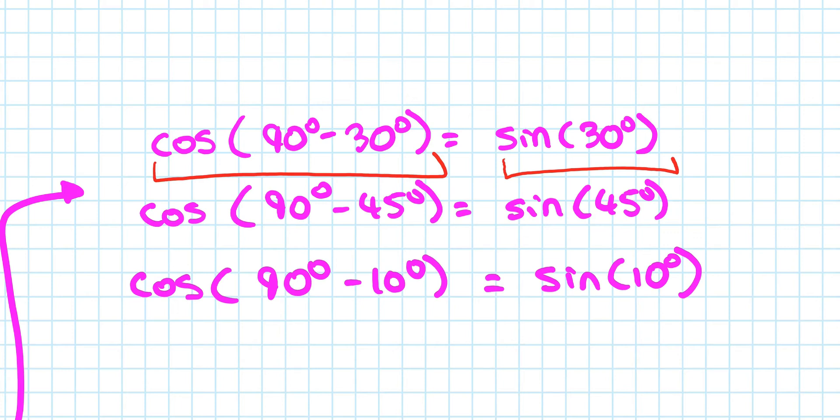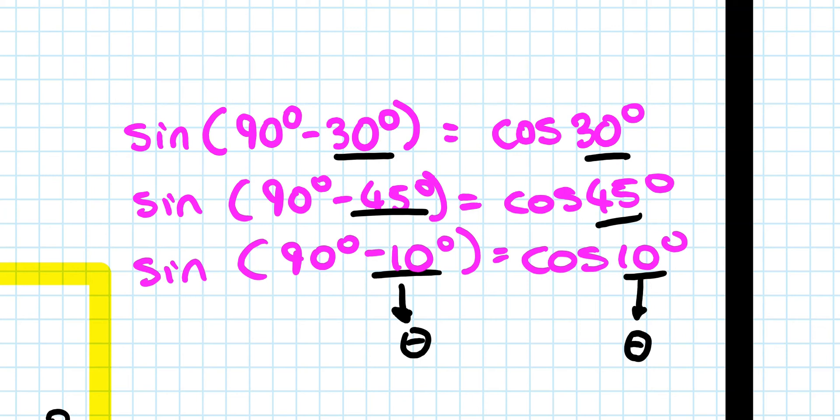And it works vice versa as well. So you could have a scenario where it's sin of 90 minus 30 is equal to cos 30, sin of 90 minus 10 is equal to cos 10, and probably the most famous one that people recognize is that the sin of 45 degrees is equal to the cos of 45 degrees.